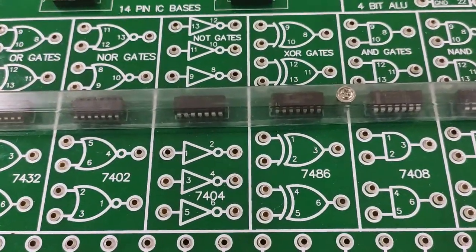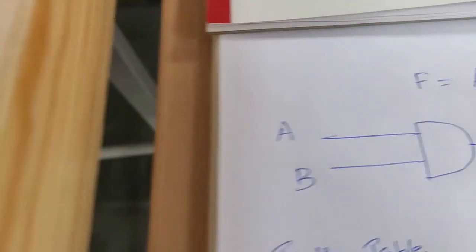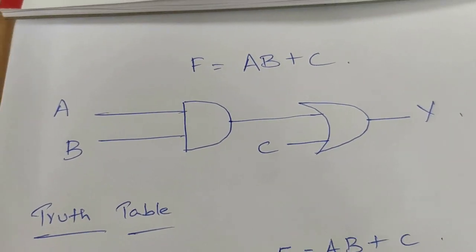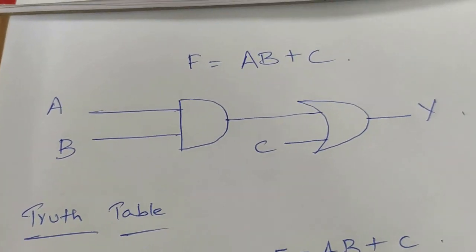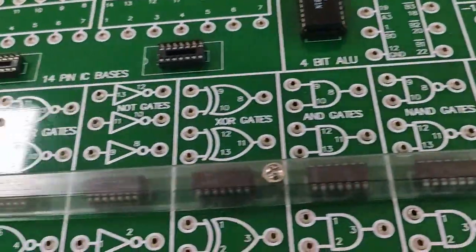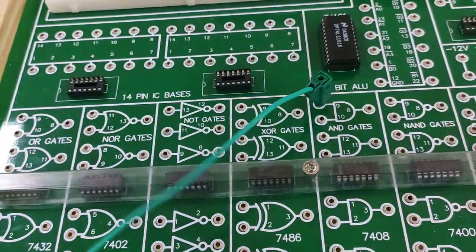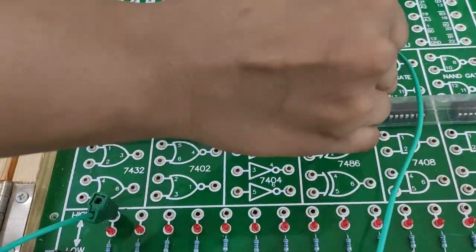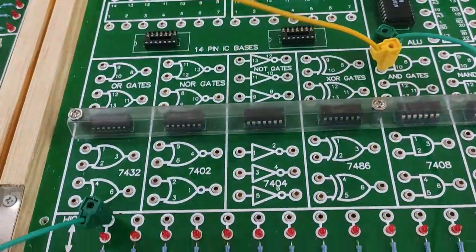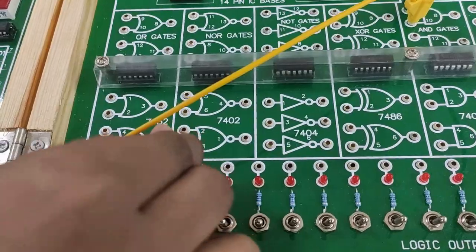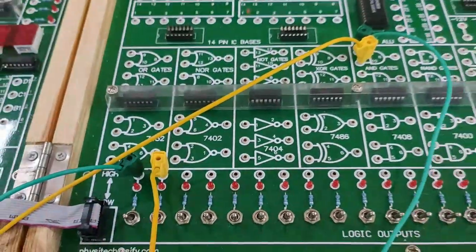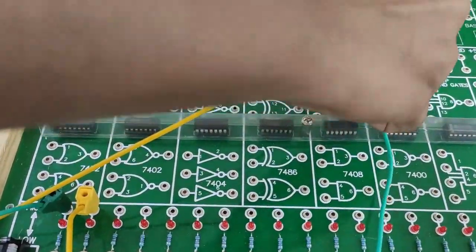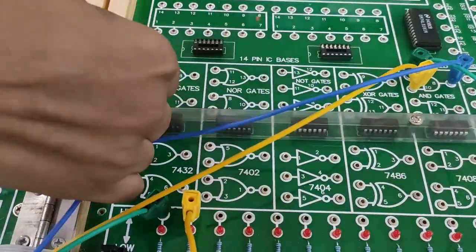Now we will demonstrate F = AB + C using these logic gates. The circuit for F = AB + C uses one NAND gate and one OR gate. You connect the two inputs of the NAND gate here — the two inputs go to the NAND gate, and the output of the NAND gate will go to the input of the OR gate.